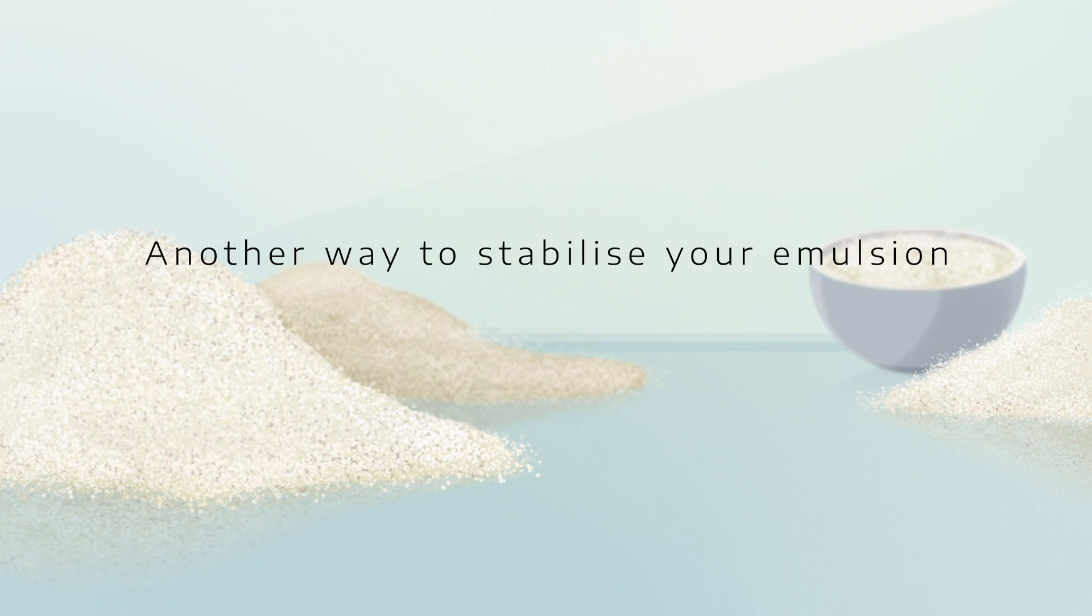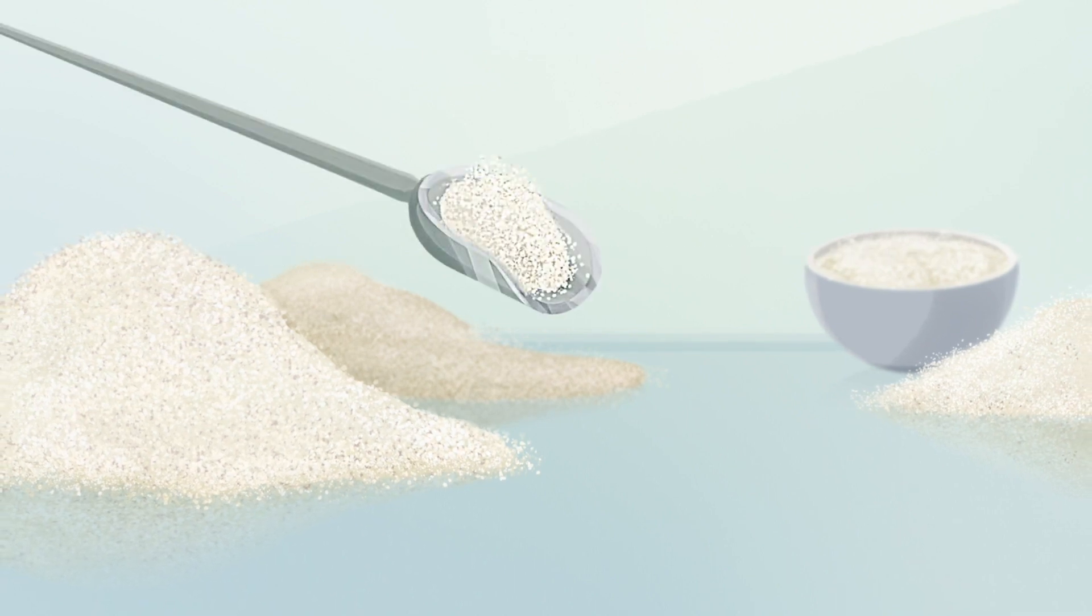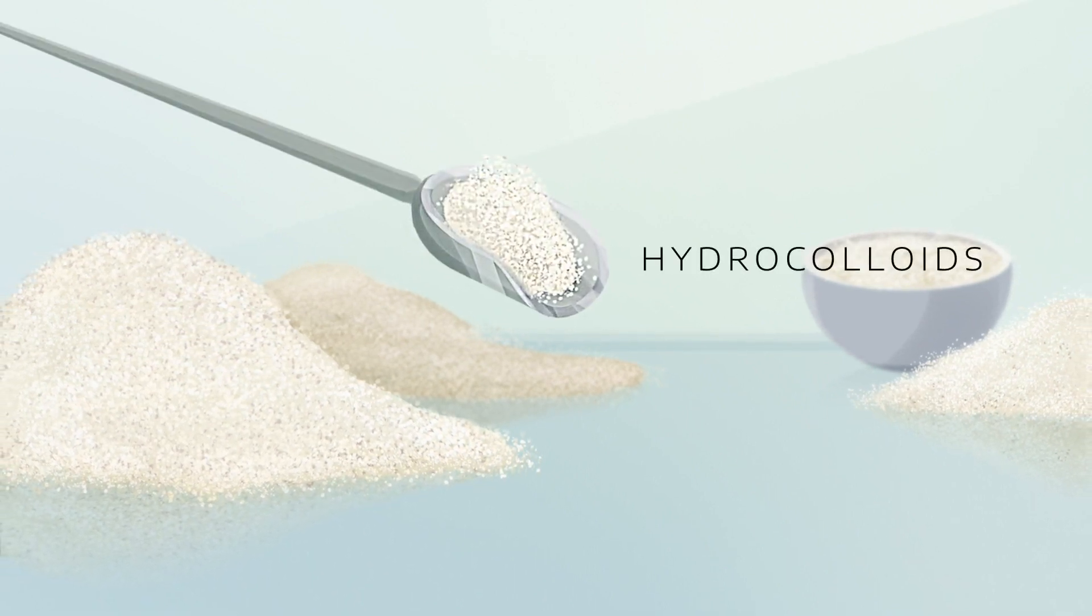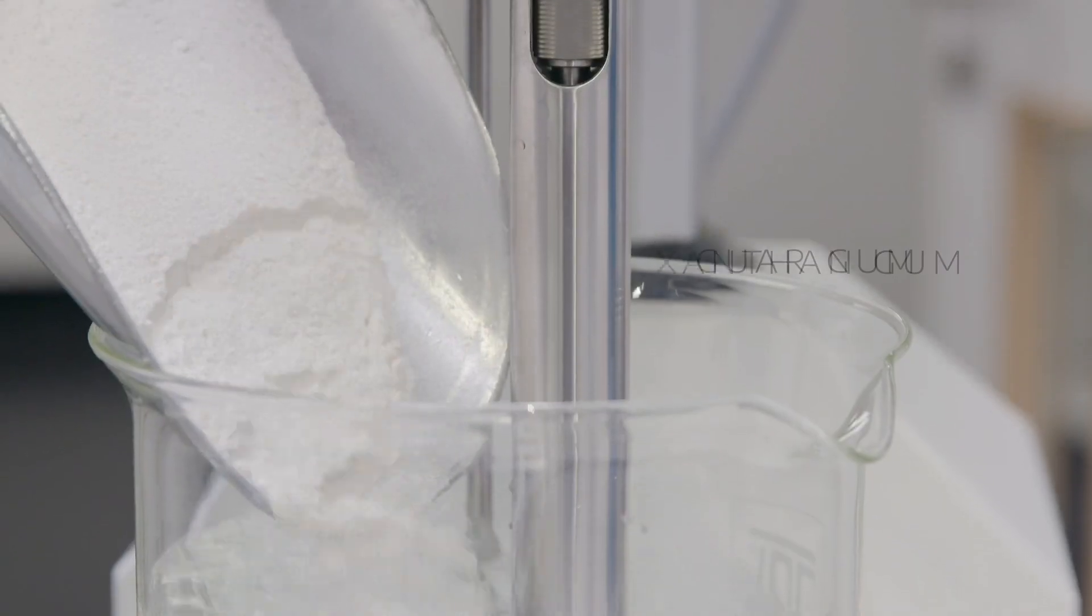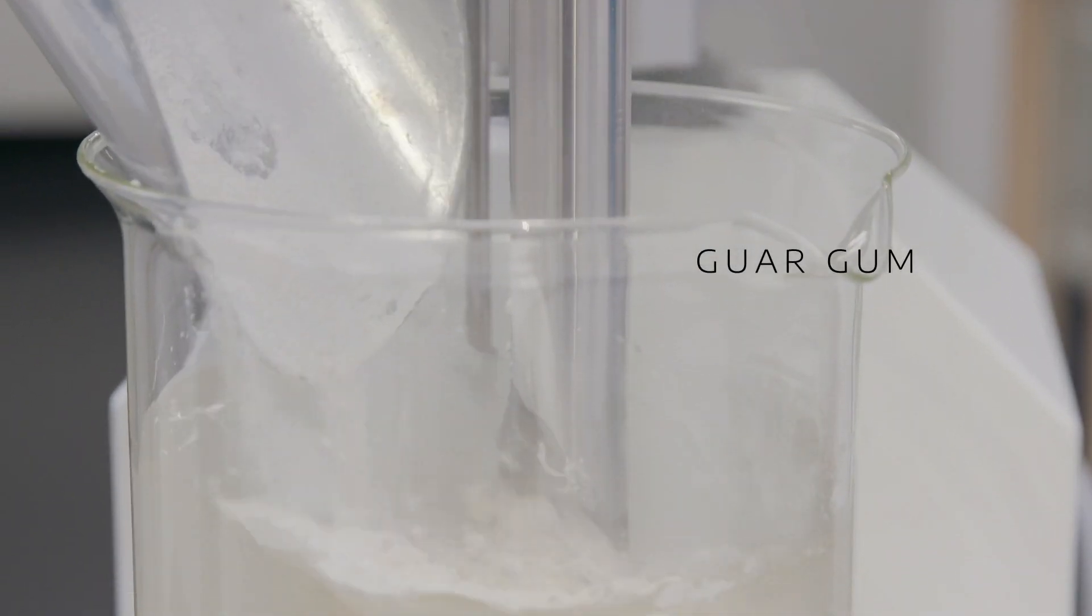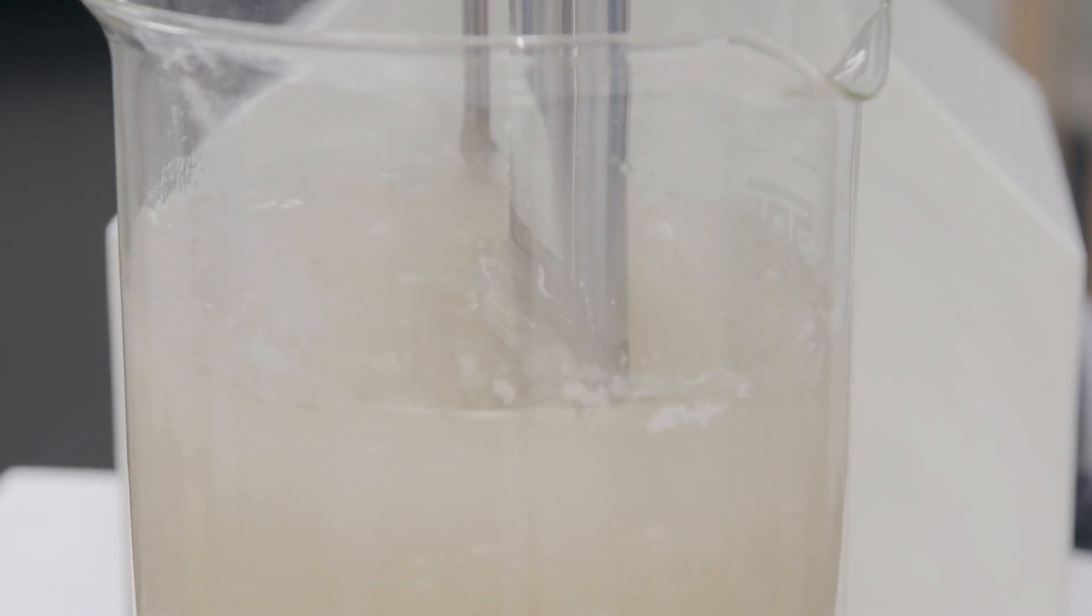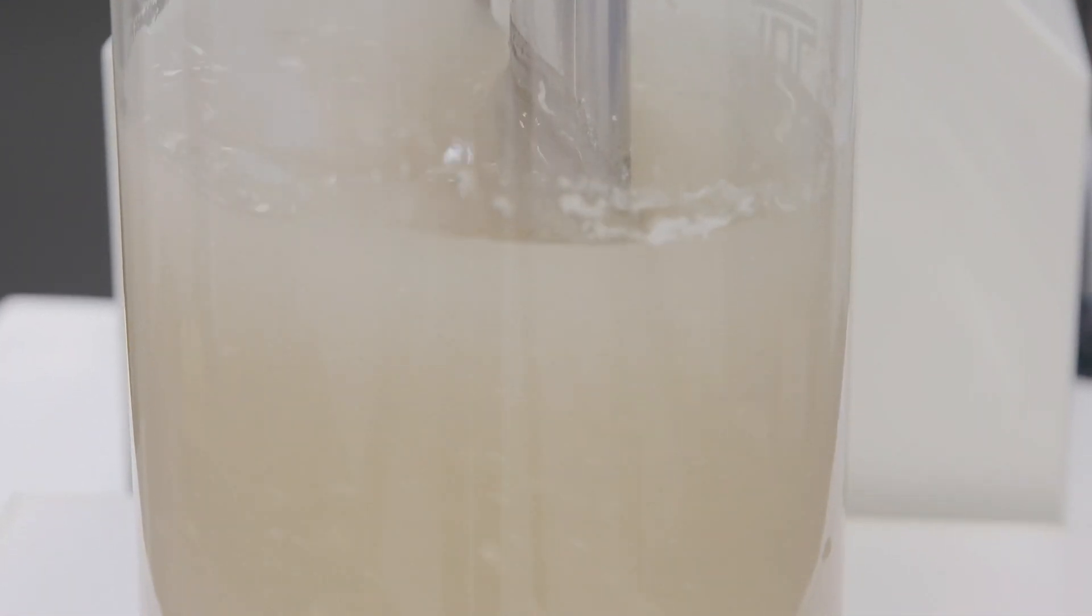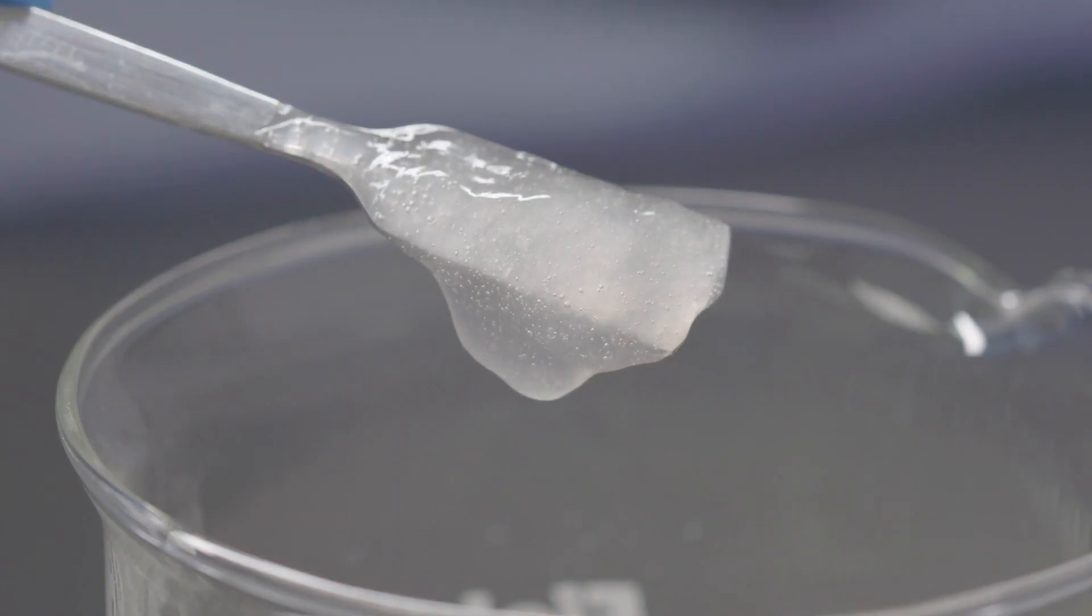Another way to stabilize your emulsion would be to use hydrocolloids like xanthan gum or guar gum. Although they're not technically emulsifiers, they help achieve stability by increasing the viscosity of the mixture, which keeps globules in suspension.